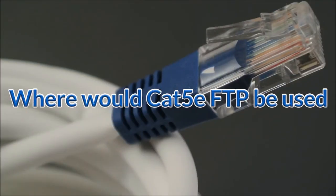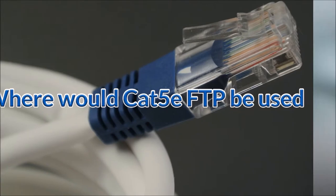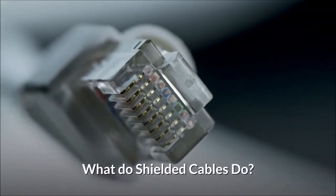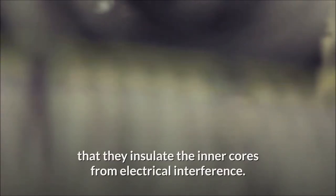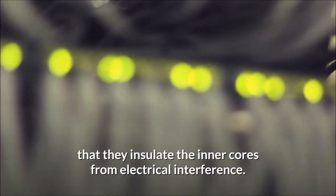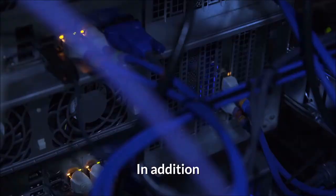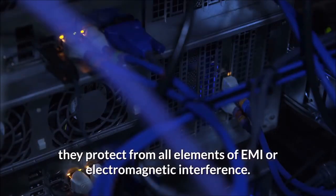Where would Cat 5e FTP be used? What do shielded cables do? The main advantage of shielded Cat 5e and other cables is that they insulate the inner cores from electrical interference. In addition, they protect from all elements of EMI or electromagnetic interference.